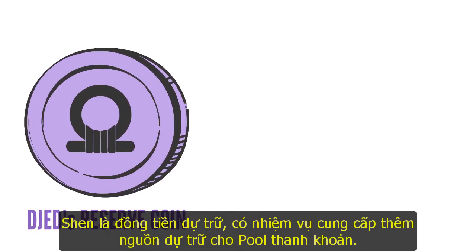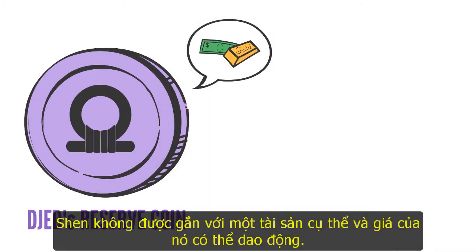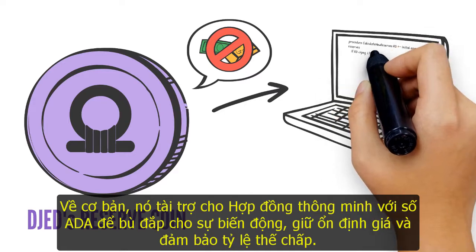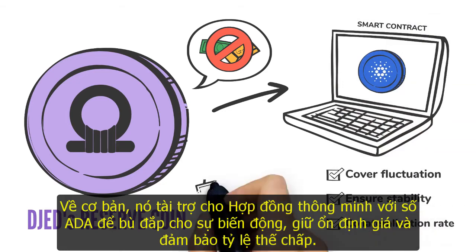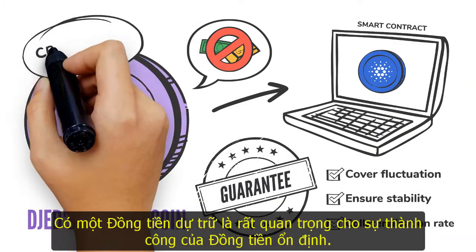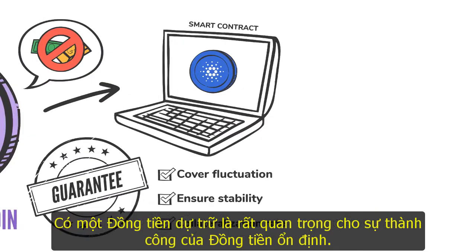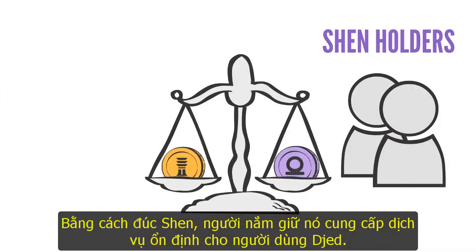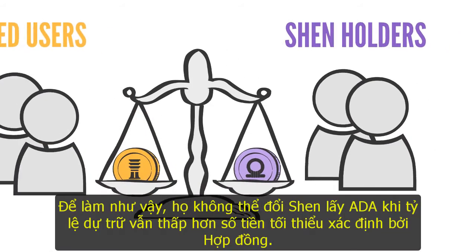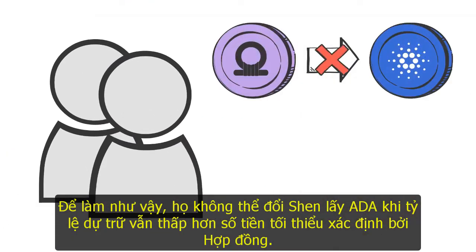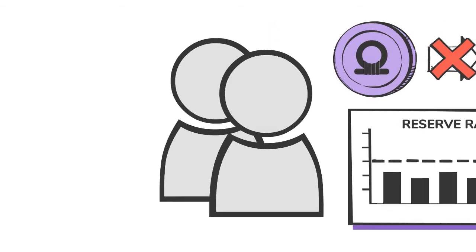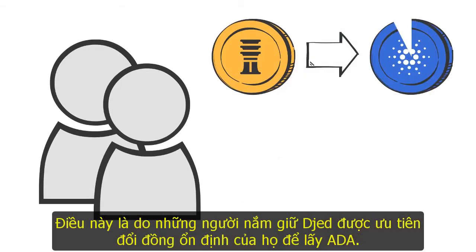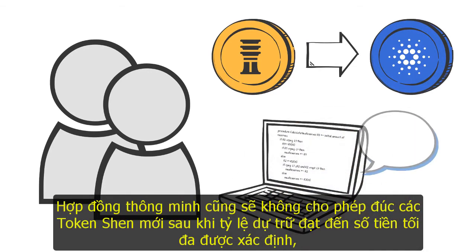That's where Shen comes into the picture. Shen is the reserve coin in charge of providing extra reserves for the pool. Unlike the Djed stablecoin, Shen is not pegged to a specific asset and its price can fluctuate. It funds the smart contract with enough ADA to cover fluctuations, ensure price stability, and guarantee the collateralization rate. By minting Shen, holders provide a service of stability to Djed users, but they won't be able to redeem Shen for ADA as long as the reserve ratio is below the minimum amount defined by the contract.